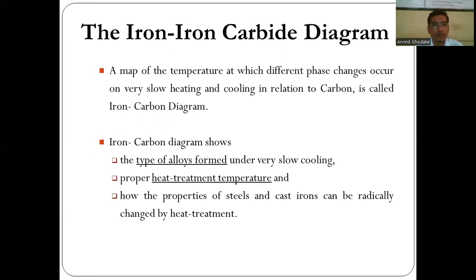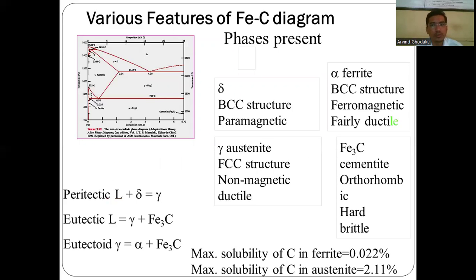The iron-iron carbon equilibrium diagram is a map of the temperatures at which different phase changes occur on very slow heating and cooling in relation to carbon composition. It shows the type of alloys formed under very slow cooling and how properties of steel and cast iron are changed by heat treatment. Phases present include: delta ferrite (BCC, paramagnetic), alpha ferrite (BCC, ferromagnetic, ductile), austenite (FCC, non-magnetic, ductile), and cementite (orthorhombic, hard and brittle).